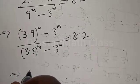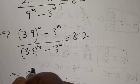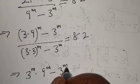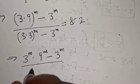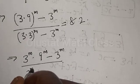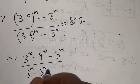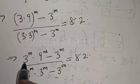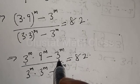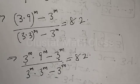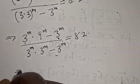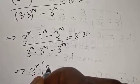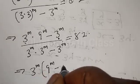This implies that we have 3 raised to power m, multiplied by 9 raised to power m, minus 3 raised to power m, over 3 raised to power m, multiplied by 3 raised to power m, minus 3 raised to power m, equal to 82. Then 3 raised to power m is common in the numerator, and 3 raised to power m is common in the denominator — let's factor it out.